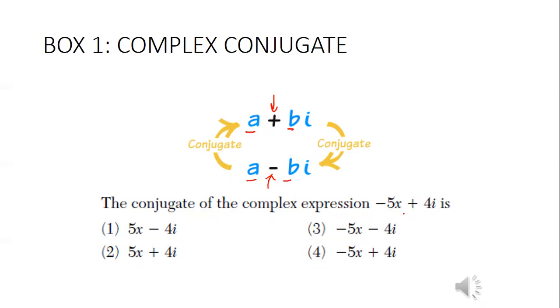So for example, if I have negative 5 plus 4i, what would be its conjugate? Good job. Exactly. You're only changing the operation. So notice that the terms are still the same, just the operation changed. This is important because this is step number one for division.